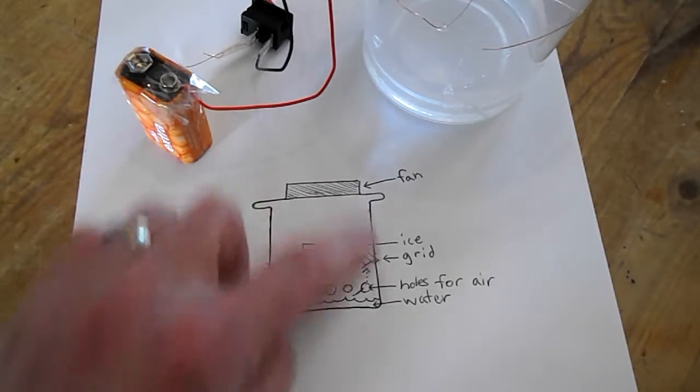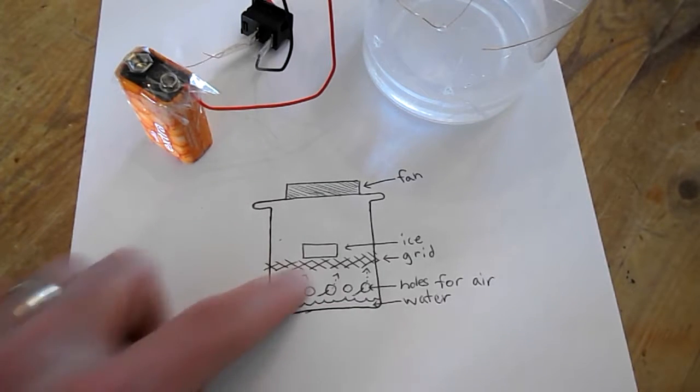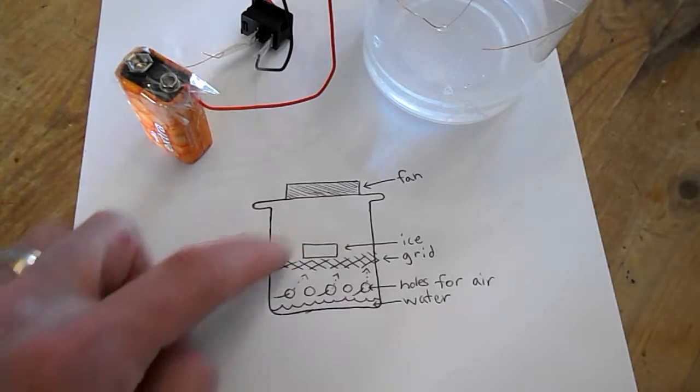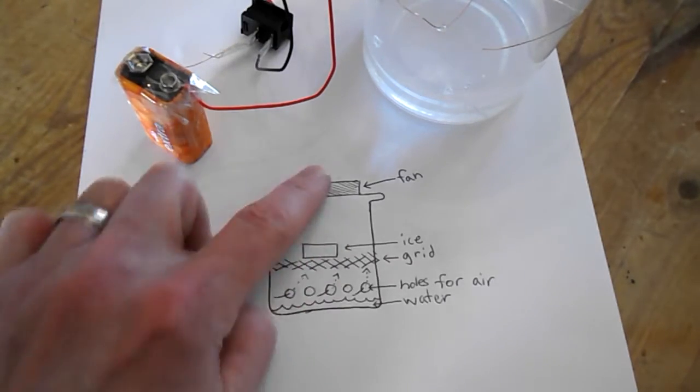Just a quick overview of what we're doing. This is the container here. We'll have a bit of water here, some holes drilled in to let air in, a grid system up here to hold the ice, and then the fan at the very top, bringing the air through.